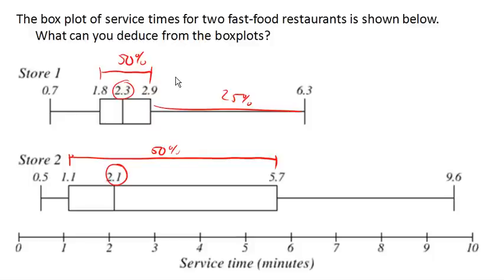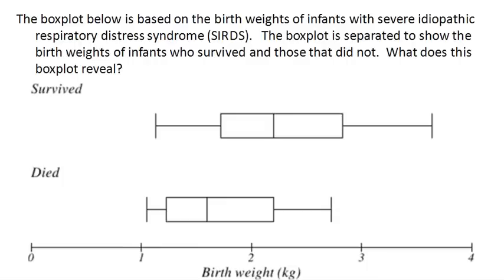Let's look at another case. This box plot shows the birth weight of infants with severe idiopathic respiratory distress syndrome, or SIRDS. The box plot is separated to show the birth weight of infants who survived versus those that did not. We can tell that the birth weights of infants that died appears overall to be smaller than the birth weight of the infants that survived.